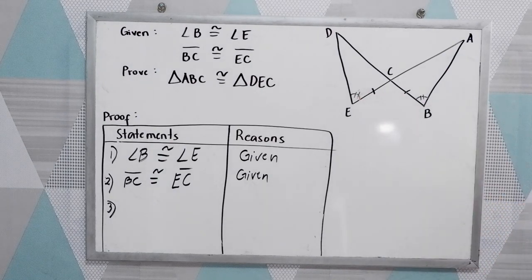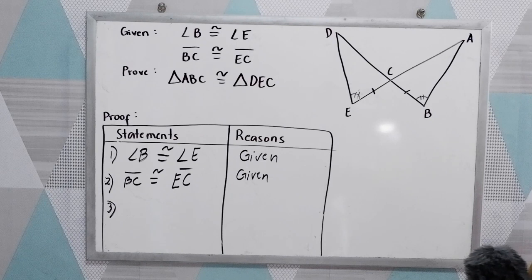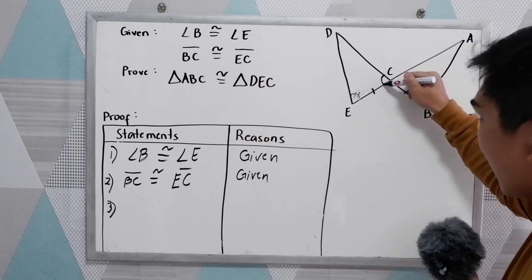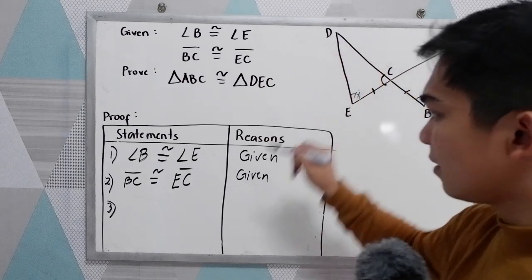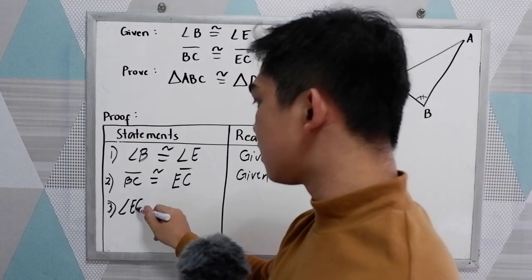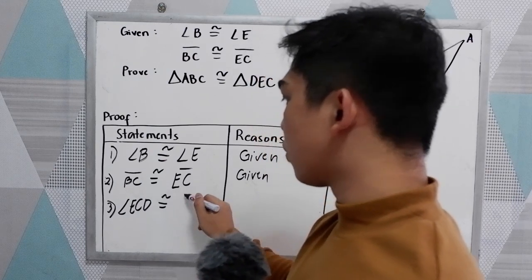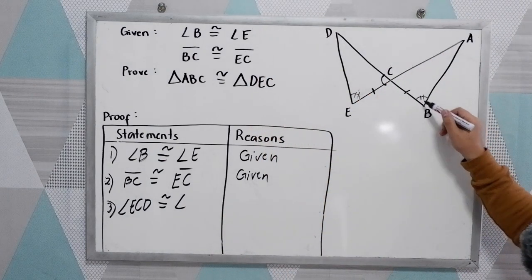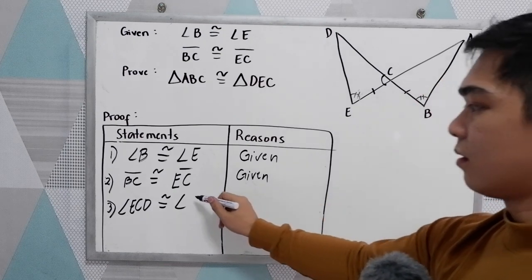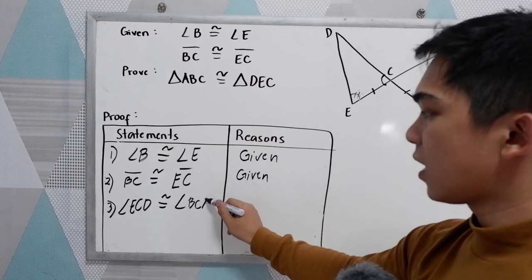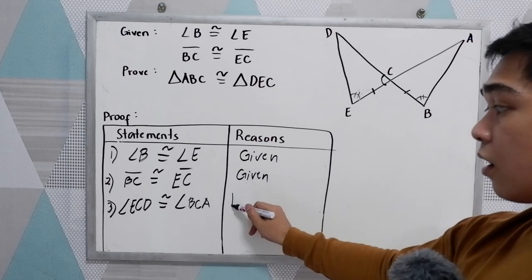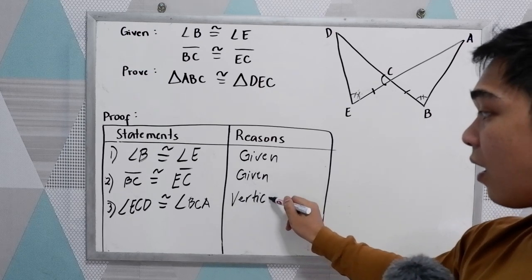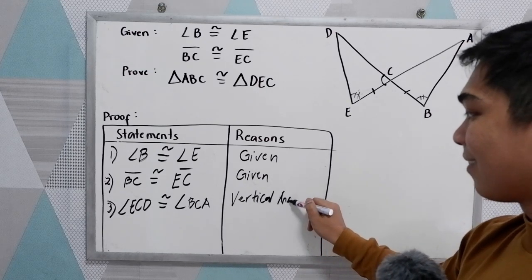Third, by definition, we know that vertical angles are congruent. So we can say that angle ECD is congruent to angle BCA. That is vertical angle theorem.